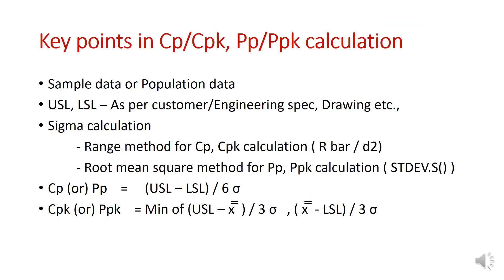Key points in Cpk and Ppk calculation: first, understand whether the data is sample data or population data, as this affects the sigma calculation. The USL and LSL come from customer requirements or drawings. Sigma calculation differs for Cp/Cpk versus Pp/Ppk — for Cp and Cpk use the range method (R-bar divided by d2); for Pp and Ppk use the root mean square method using the Excel function STDEV.S. Once you have USL, LSL, and sigma, calculate Cp or Pp using USL minus LSL divided by 6 sigma, and Cpk or Ppk as the minimum of USL minus X-double-bar divided by 3 sigma or X-double-bar minus LSL divided by 3 sigma. Thank you.